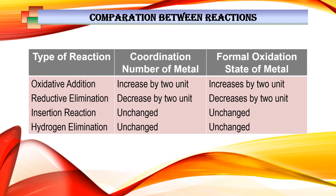In comparison, if I look at all the reactions, basically oxidative addition and reductive elimination change the coordination number of the metal as well as the formal oxidation state. Oxidative addition increases the coordination number and increases the positive oxidation state — that means it oxidizes the metal center by two units — whereas reductive elimination is exactly the opposite. In insertion reactions and beta hydride elimination reactions, the metal coordination environment as well as the formal oxidation state remains unchanged.